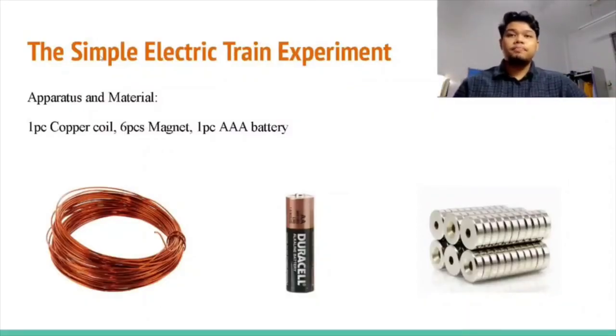Now I will explain about the findings from our experiment, which is a simple electric train. From the experiment that we conducted, we used one battery, six pieces of magnets, and a copper wire. The copper wire is shaped into a coil with diameter of 1.5 cm.